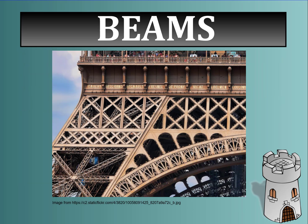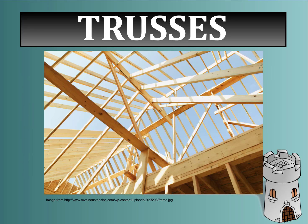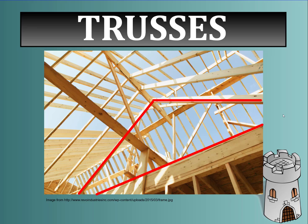This famous structure largely depends on beams throughout the entire building. A truss is a framework of beams joined together, and trusses usually form the shape of interlocking triangles. Take a look at this roof being built in a home — you can see many triangles placed throughout the structure, because the truss largely depends on the triangle to make it strong.